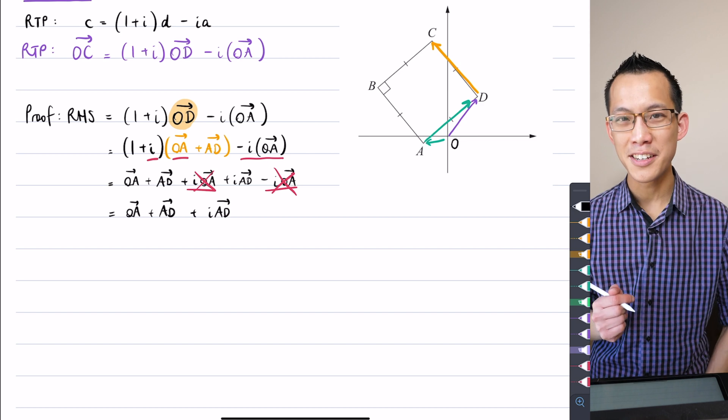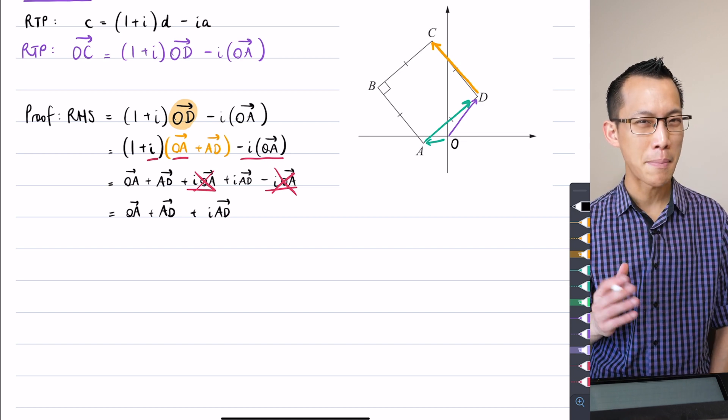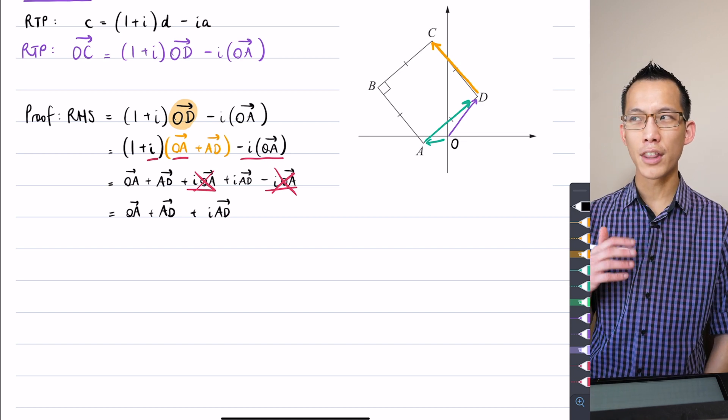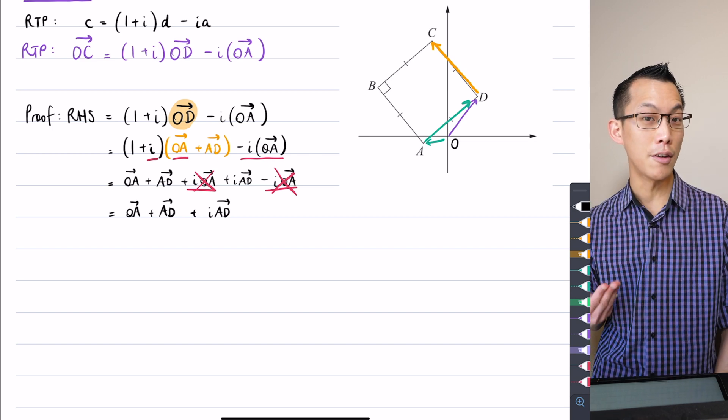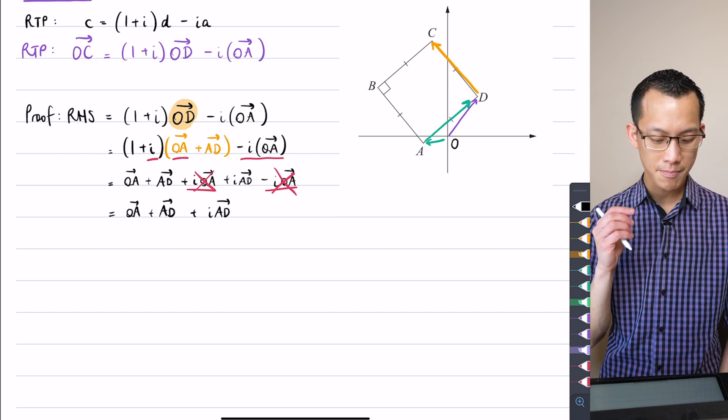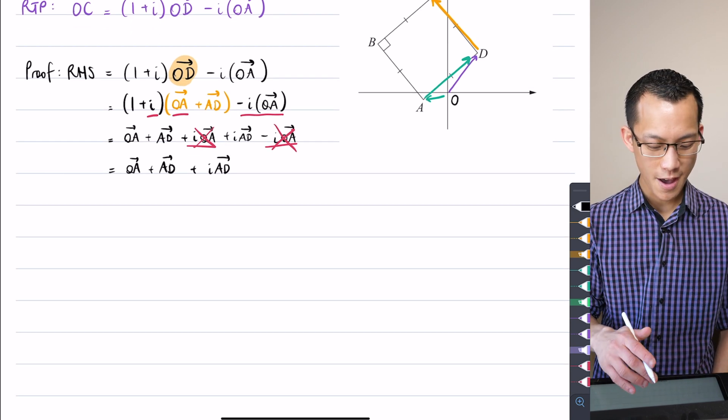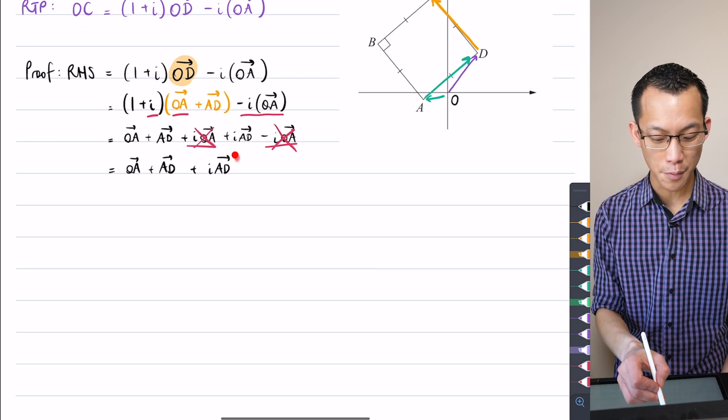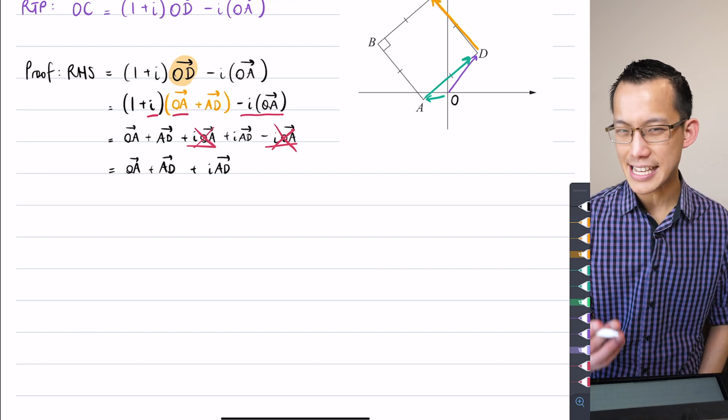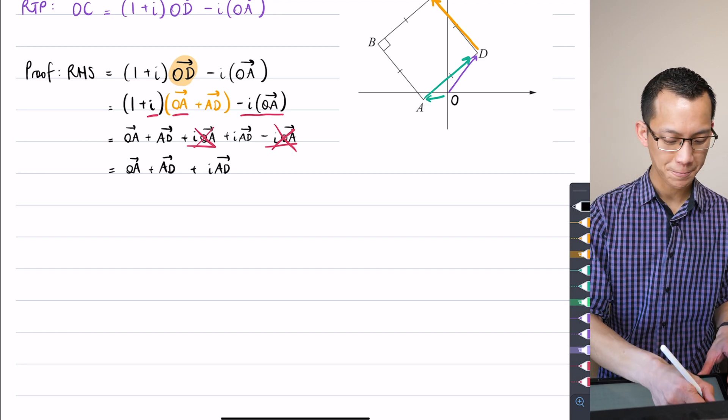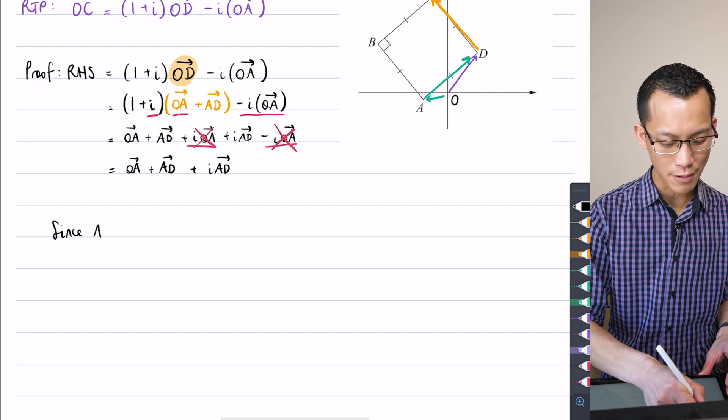This is something which you had to do in your task. If you remember thinking about the parallelogram question, you were given three vertices of a parallelogram, you had to find the fourth one. The mistake that a lot of students made is what I'm about to highlight here.